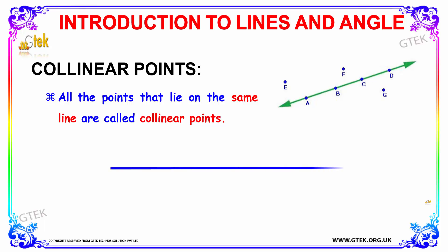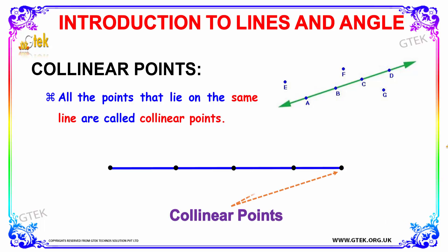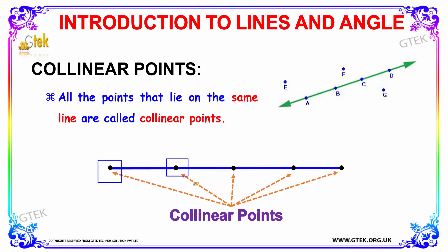Now let's see about collinear points. All the points that lie on the same line are said to be called as collinear points. Here you can see there are totally five collinear points lying on the same line.